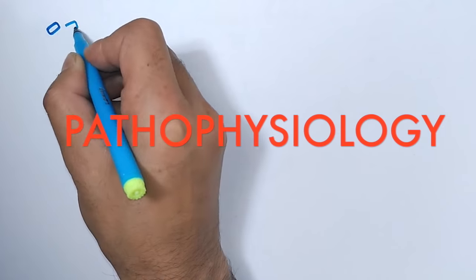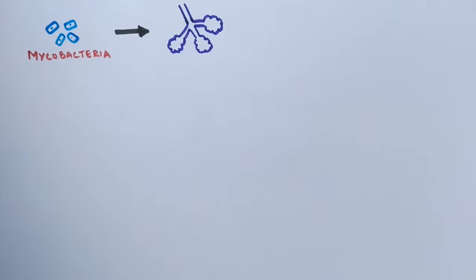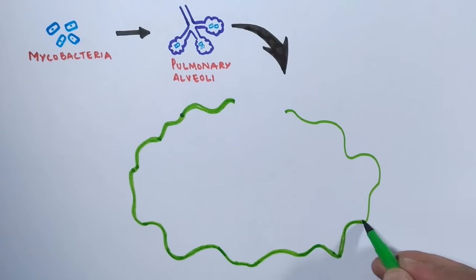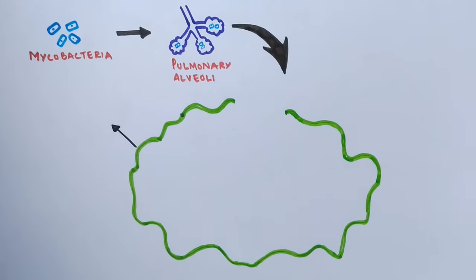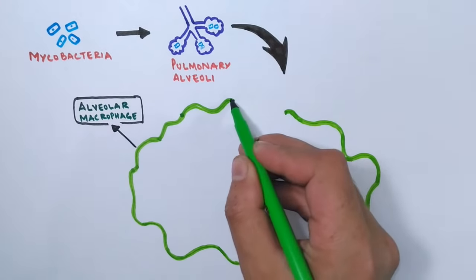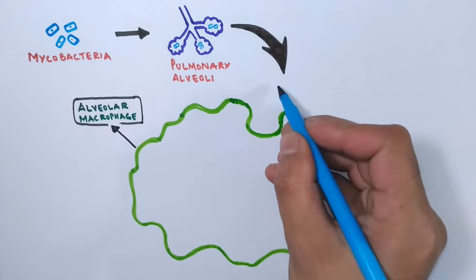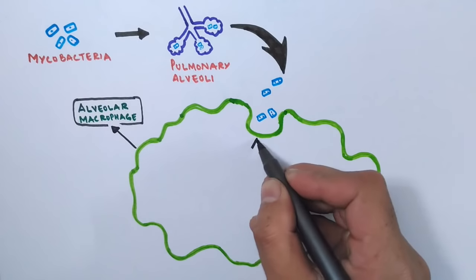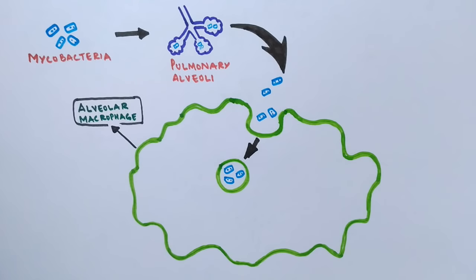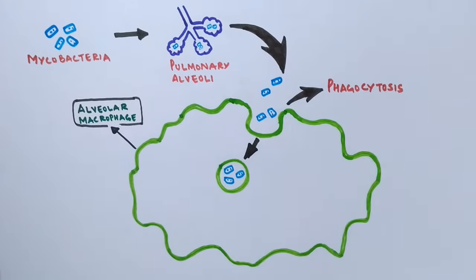Now let's see the pathophysiology of tuberculosis. The first step is the entry of mycobacteria into the pulmonary alveoli. To defend against pathogens, the immune system has lodged macrophages in the alveoli called alveolar macrophages. When the macrophage detects the presence of pathogens, it captures and phagocytizes the mycobacterium into the cell through a process called phagocytosis.